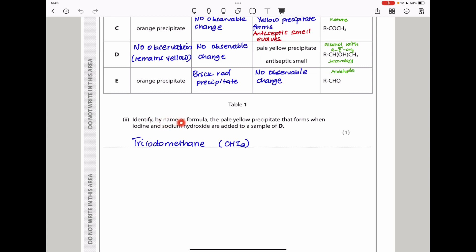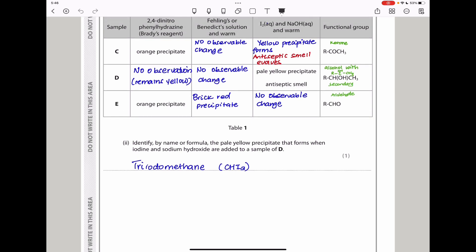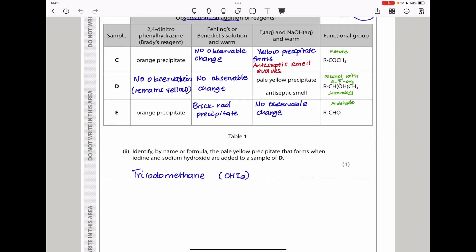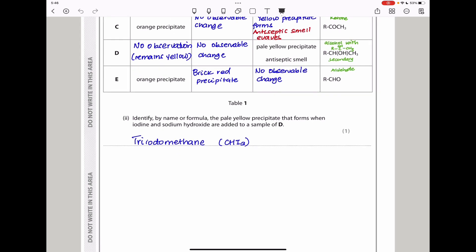Moving on, they say identify by name or formula the pale yellow precipitate that forms when iodine and sodium hydroxide are added to sample D. When you add iodine with sodium hydroxide to sample D, remember D here is a secondary alcohol, we are going to observe a product called triodomethane, or you could write it like that. So that's it. Let's move on.